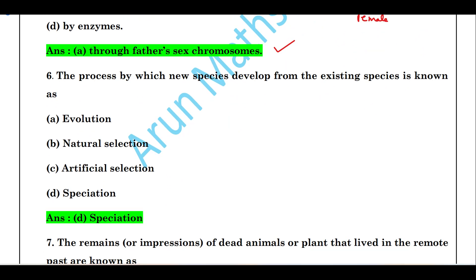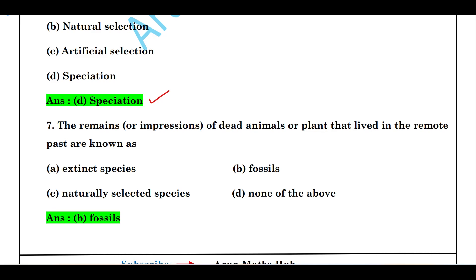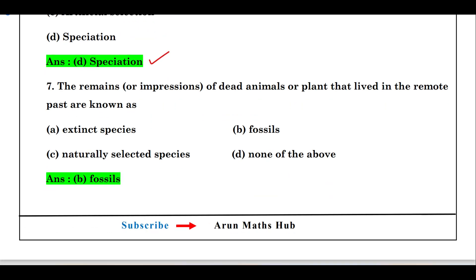Question number 6: the process by which new species are developed from existing species is known as speciation. The remains or impression of dead animals or plants that lived in the remote past are called fossils.